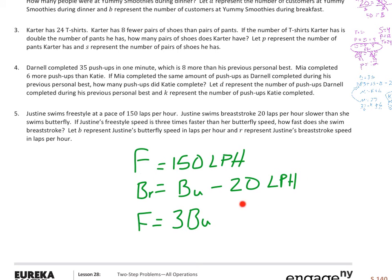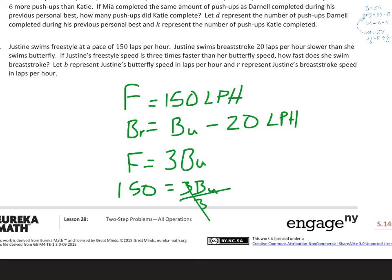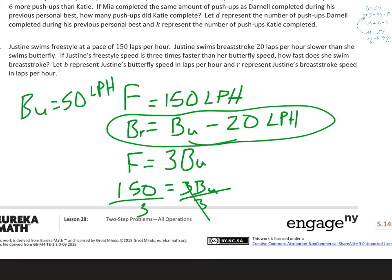And the last one, don't let all these labels kick you. They're all the same thing. So you can just think of them all as apples. But we've got freestyle is 150 laps per hour. Breaststroke is 20 laps slower than her butterfly. And her freestyle is three times the butterfly. So since we know freestyle, we're going to plug that in and solve and say that 150 equals three butterfly. So now I'm just going to divide both sides by three, which cancels that three out and leaves me butterfly. So BU equals 50 laps per hour. And so now I can plug that into this equation and do 50 minus 20, which is 30. So BR equals 30 laps per hour.